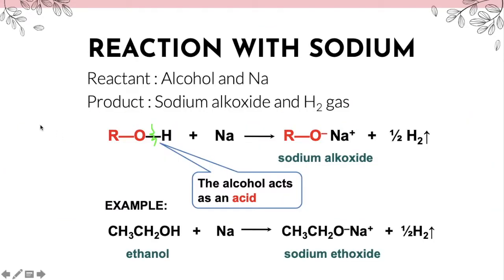Reaction with sodium. The reactants are alcohol and sodium metal. The products are sodium alkoxide and hydrogen gas. The alcohol acts as an acid because the OH bond breaks, producing H⁺. The OR part becomes OR⁻, which binds with Na⁺ metal ion, becoming sodium alkoxide plus half a molecule of hydrogen gas, since there is only one hydrogen atom.